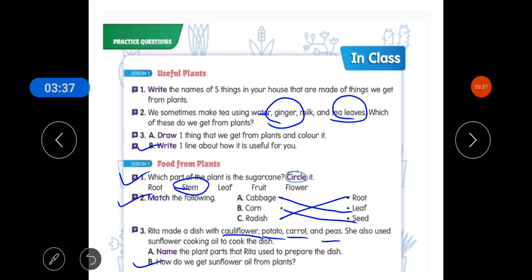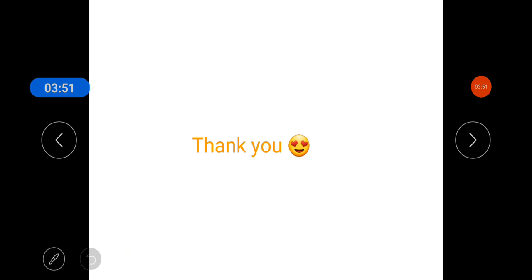B part is how do we get sunflower oil from plants? Students, we get sunflower oil from plants by crushing the seed of sunflower. So you have to complete the practice questions of lesson number 1 and 2. Thank you everyone for watching this video.